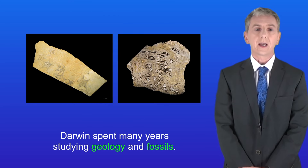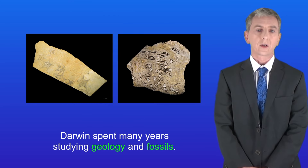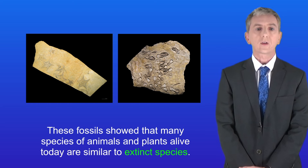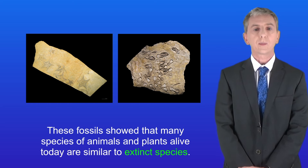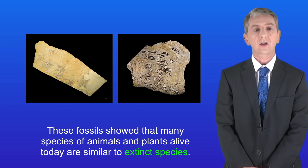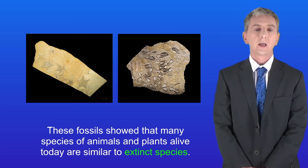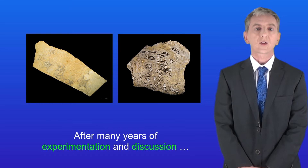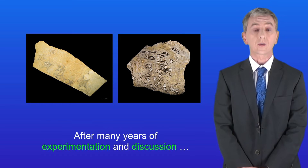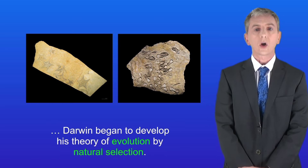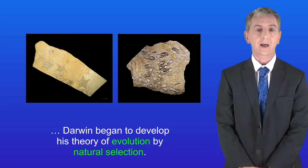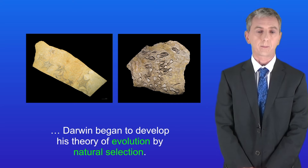Darwin spent many years studying geology and fossils. These fossils showed that many species of animals and plants alive today are similar to extinct species. After many years of experimentation and discussion, Darwin began to develop his theory of evolution by natural selection.